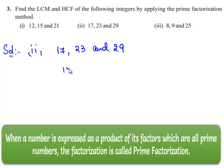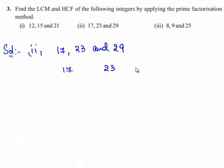So now let us write 17, 23 and 29 as a product of primes. Since the given three numbers are already prime numbers, they have factors one and itself only.